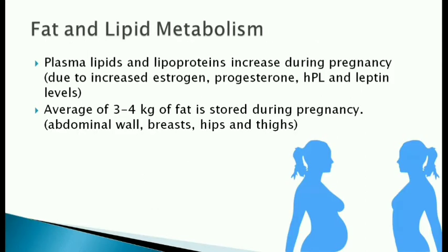Fat and lipid metabolism: There are increased levels of plasma lipids and lipoproteins during pregnancy. This is due to hormonal changes, especially the increase in estrogen, progesterone, HPL, and leptin. Thus, an average of 3-4 kg of body fat is stored during pregnancy and is distributed over the abdominal wall, breast, hips, and thighs.